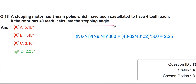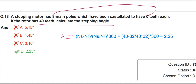They are asking about the stepping angle. We know the stepping angle β = (Ns − Nr) / (Ns × Nr) × 360°. Here Ns = 40 and Nr = 8 × 4 = 32, because we multiply 8 main poles with the number of teeth. So β = (40 − 32) / (40 × 32) × 360° = 8/1280 × 360° = 2.25 degrees.